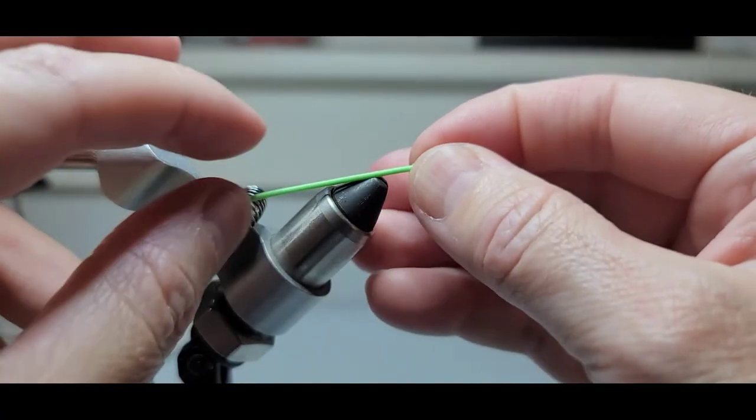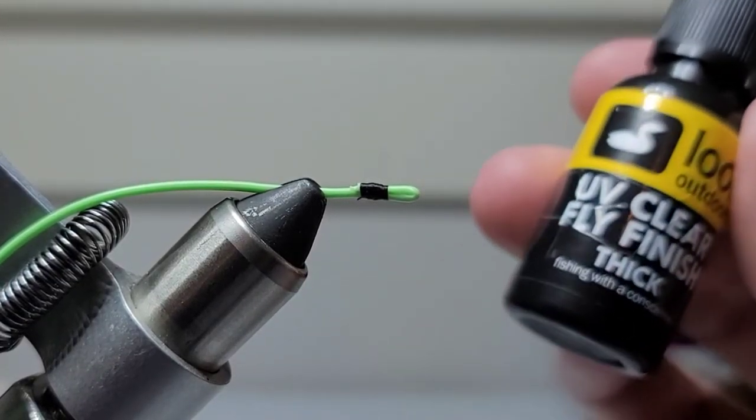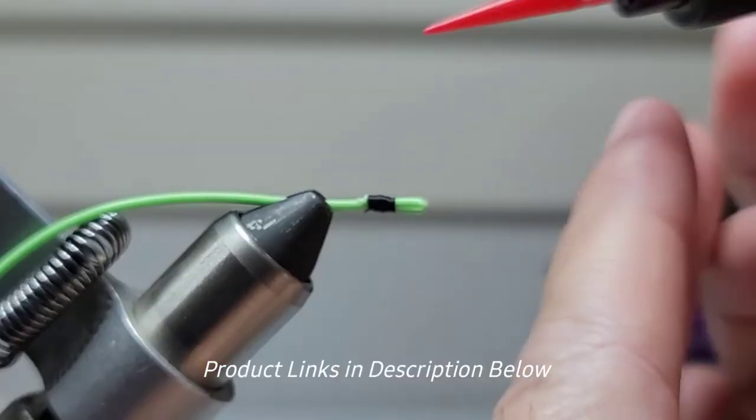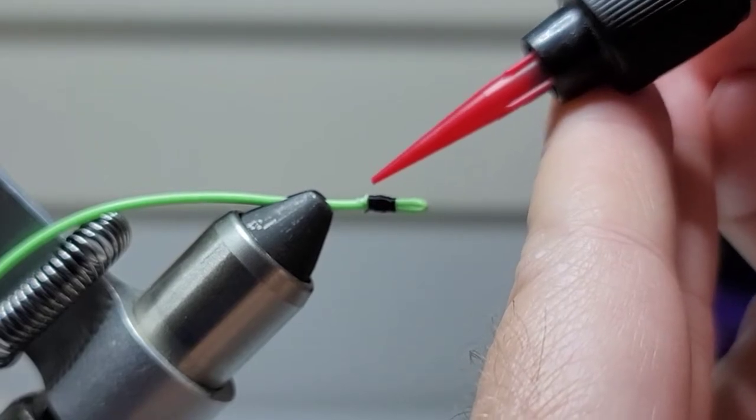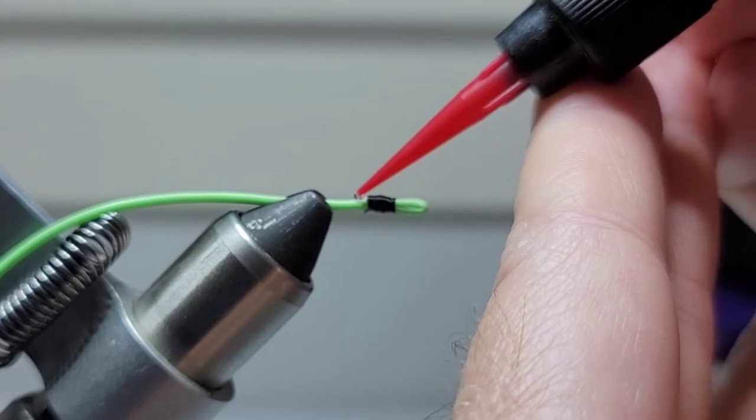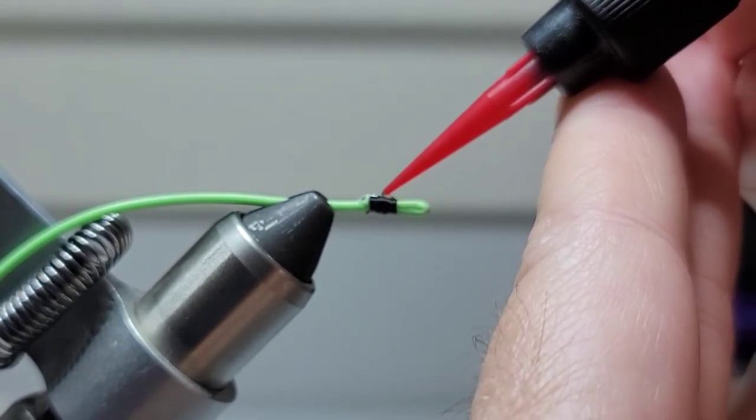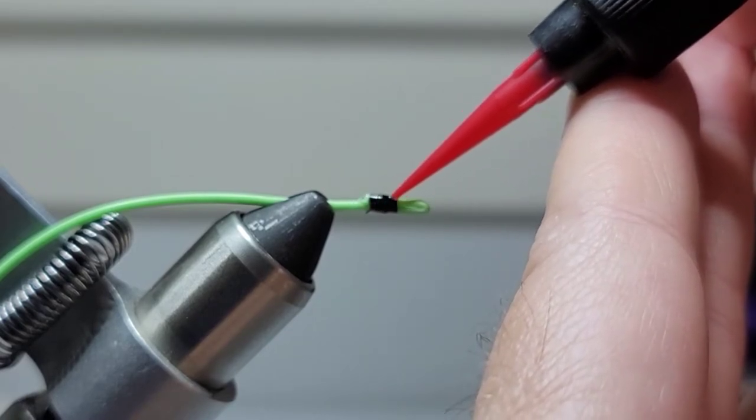Now we're gonna go ahead and stick this back in the vise and we're gonna take some Loon UV clear. I'm just gonna coat this thread first, start back here. Take your time and squeeze this out, create a nice smooth bridge right there, and just coat all this thread.